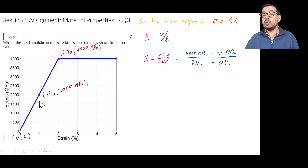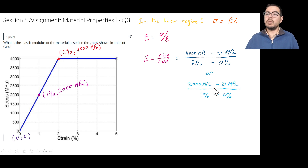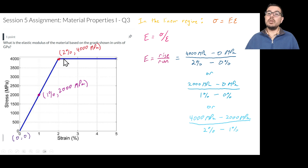We can also use another point. At 1% strain, there's a stress of 2000 megapascals. Using that point with the origin gives 2000 MPa divided by 1%, which is the same value for the elastic modulus. Yet another approach uses both non-origin points: 4000 MPa minus 2000 MPa, all over 2% minus 1% — again the same result.